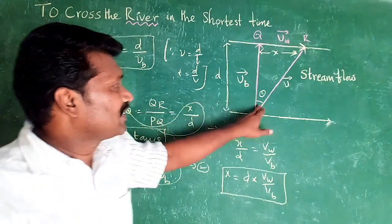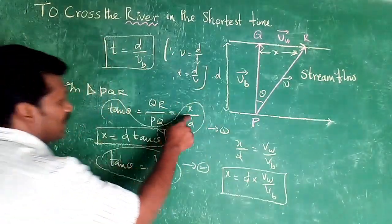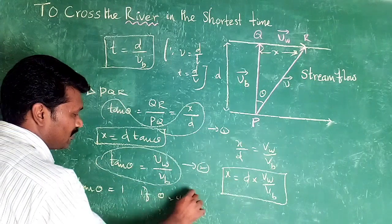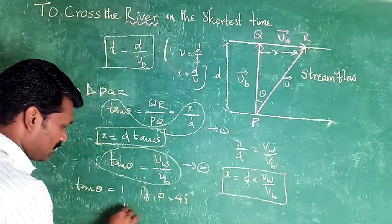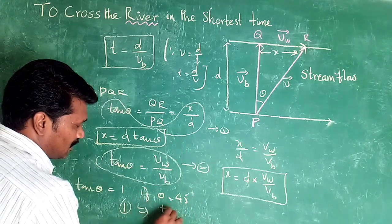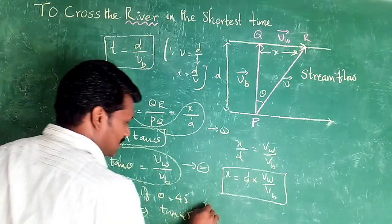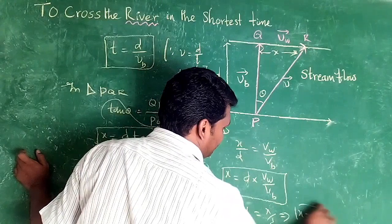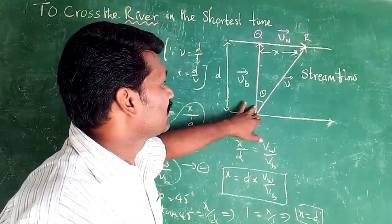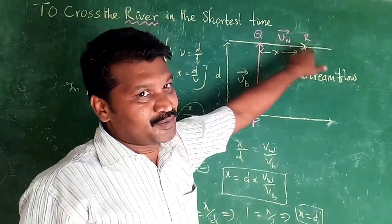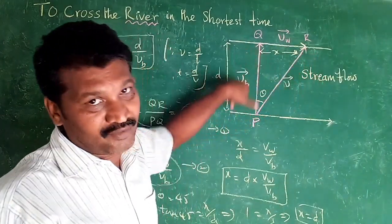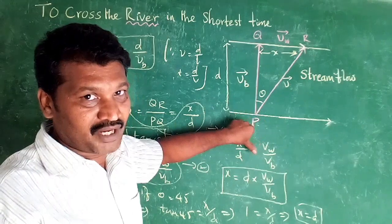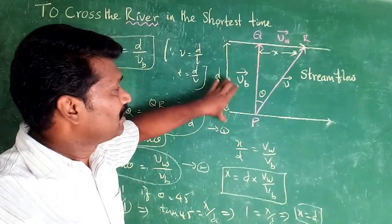If θ is equal to 45 degrees, then tan θ equals 1. So x by D equals 1, which means x equals D. This gives the condition that V_water equals V_boat. That is, the speed of the river current equals the speed of the boat — this is the condition.